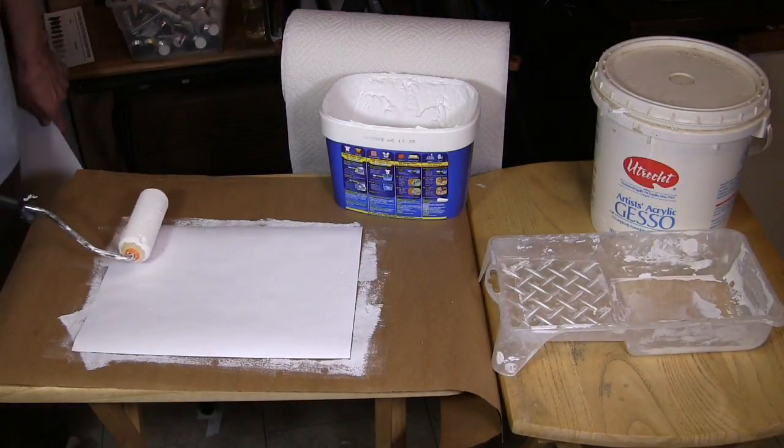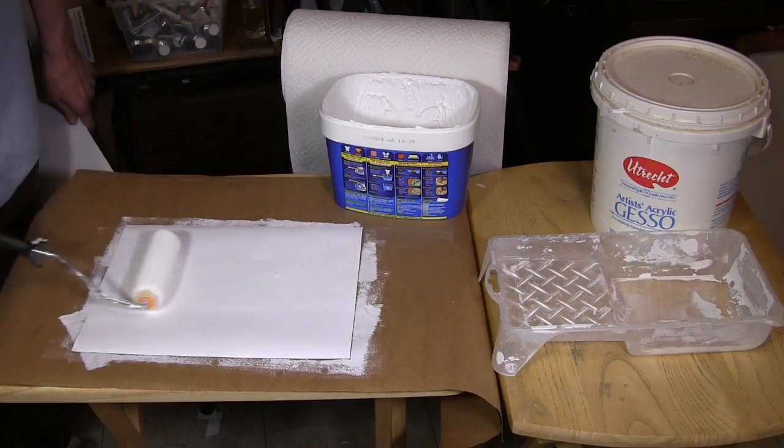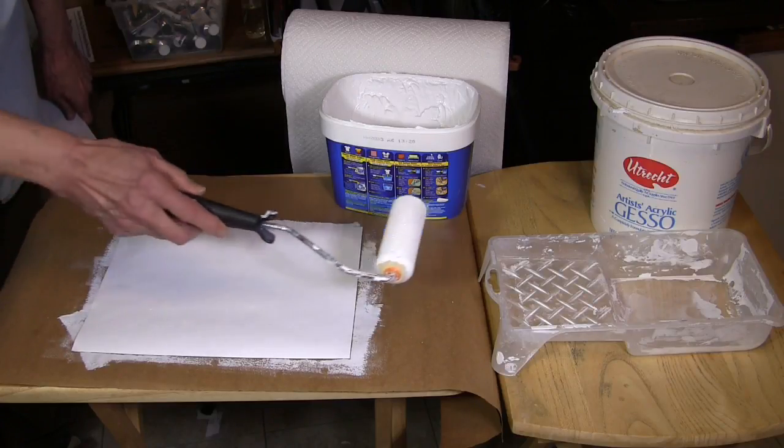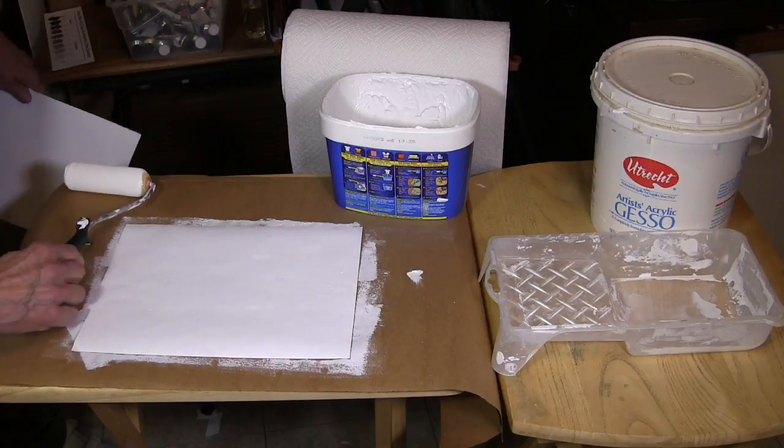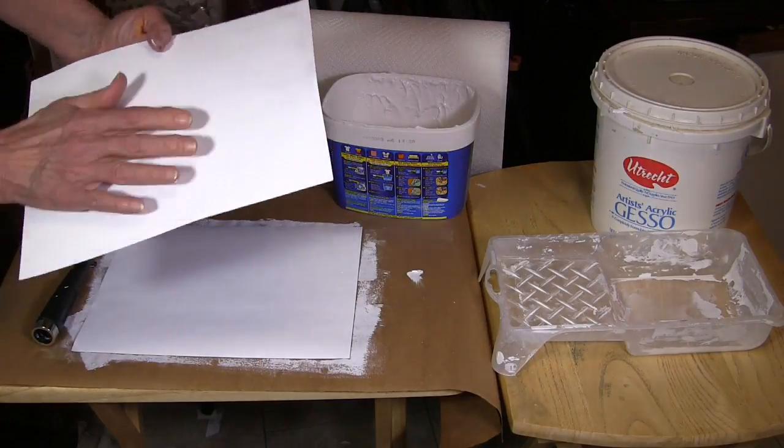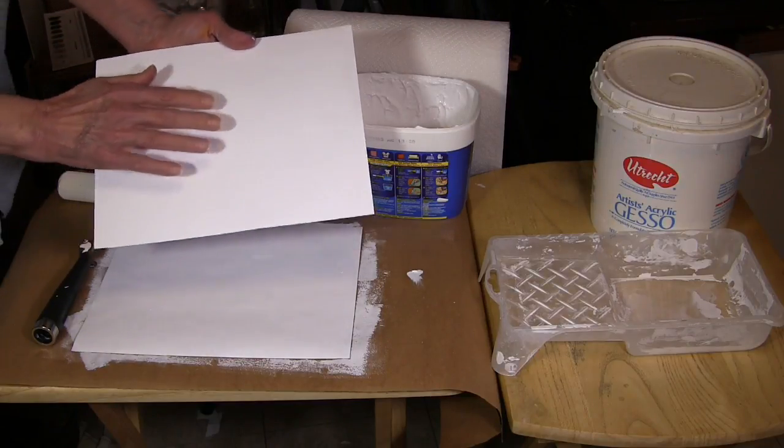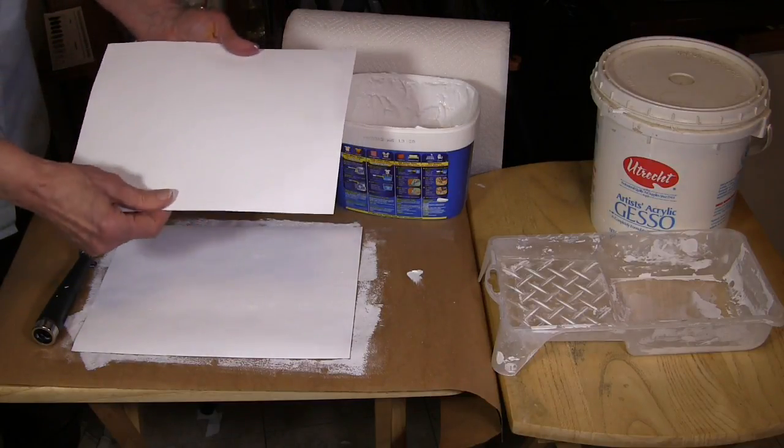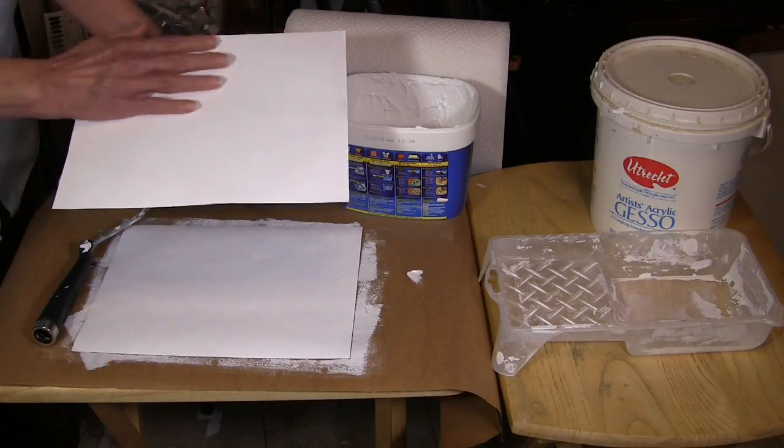So you see, just this little bit of time we've waited and it's going to give us a smoother surface. One thing to note here is that this surface does feel a little bit rough, almost like a little bit of sandpaper. So once it's dry and ready to go, give it a little hit with the sandpaper to get that roughness off.